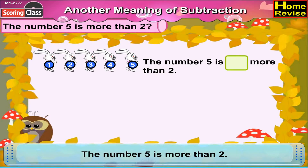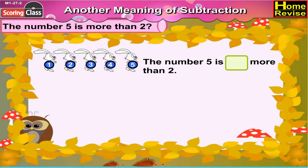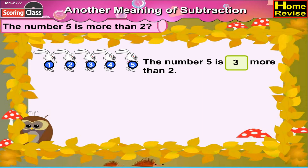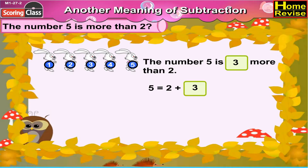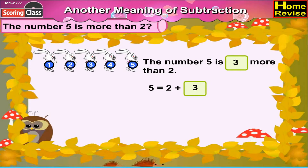By how much is number 5 bigger than 2? It is 3. So the number 5 is 3 more than 2. Now, 5 is equal to 2 plus how many? Of course it is 3. So it means that 5 is equal to 2 plus 3.